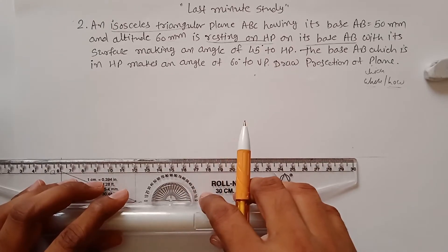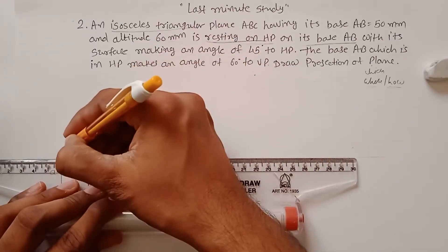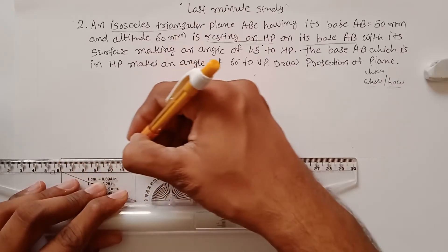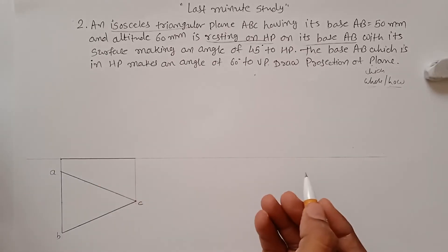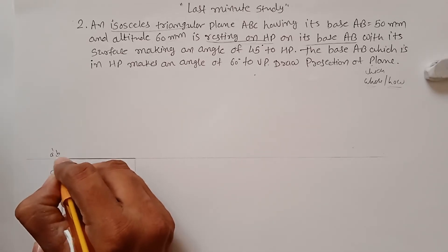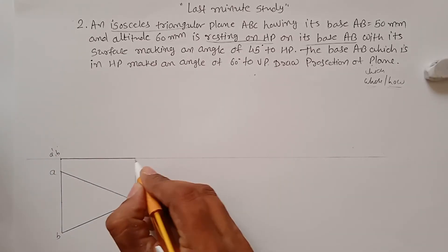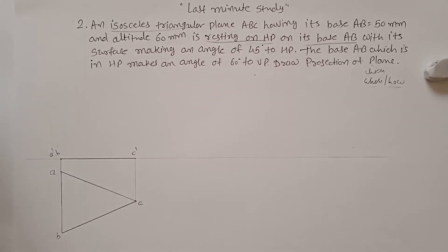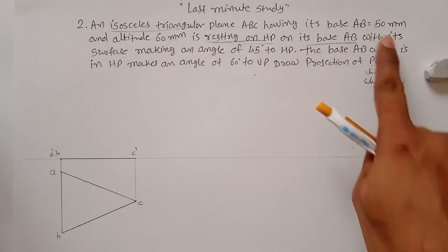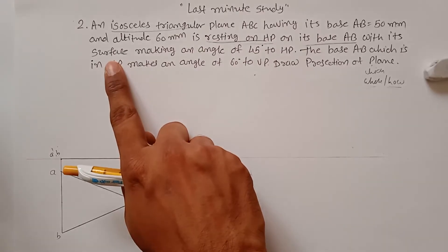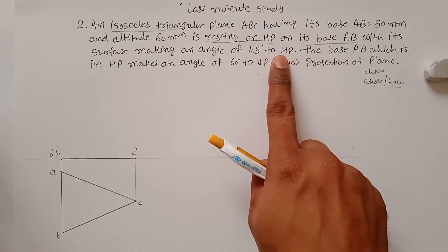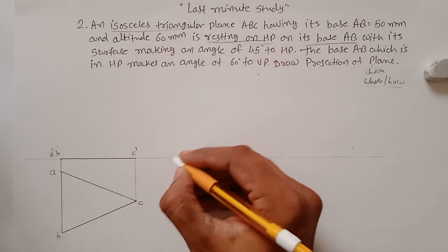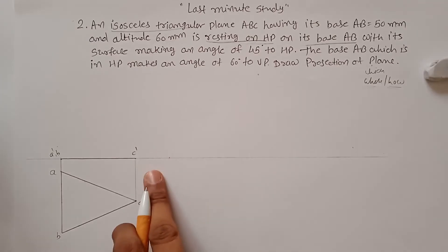Don't draw dotted or dashed lines here; the projection lines must be straight thin lines. This is your front view in which the points are A-dash, B-dash, and C-dash. The first initial position is now complete. The plane surface is making an angle of 45 degrees with the HP.